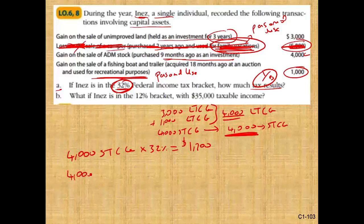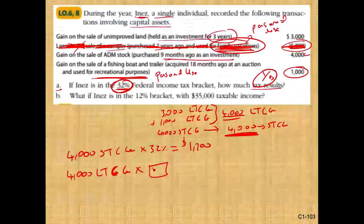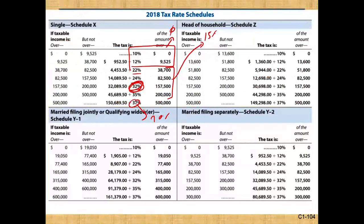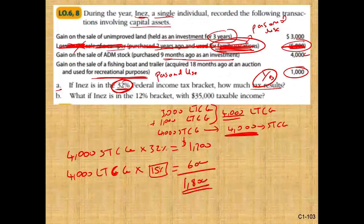Now, what about the $4,000 long-term capital gain? How much do we multiply this — is it 32%? No. If you're in the 10 to 12% bracket, you don't pay any taxes on long-term capital gains. If you are in the 22, 24, 32, or largely 35% brackets, you will pay 15%. If you are in the 37% tax bracket, you pay 20%. We are comfortably in the 32%, so we pay 15%. So $4,000 times 0.15 equals $600. The total capital gain tax is $1,280 plus $600, which is $1,880.